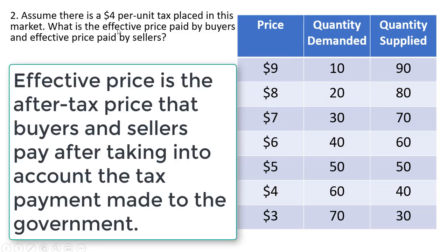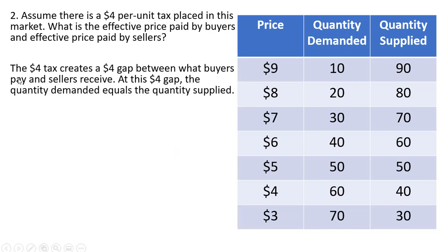Now let's assume there's a $4 per unit tax placed in this market. What is the effective price paid by buyers and the effective price paid by sellers? In this market, the equilibrium price is $5 and the equilibrium quantity is 50 without a tax.